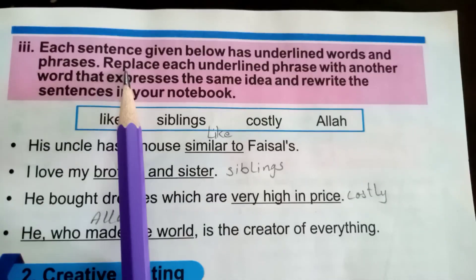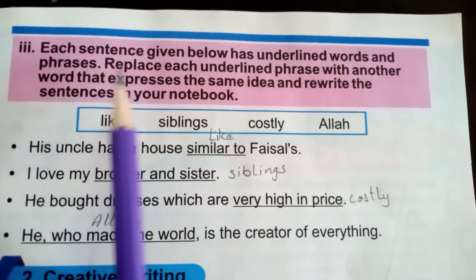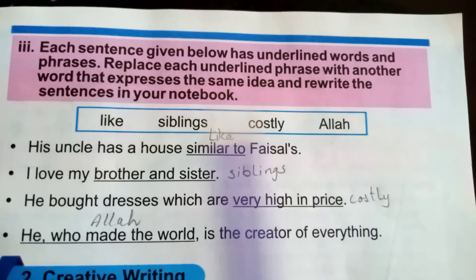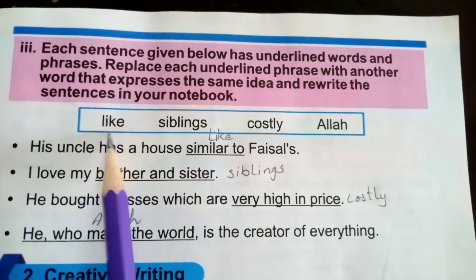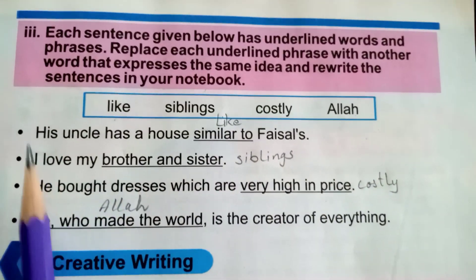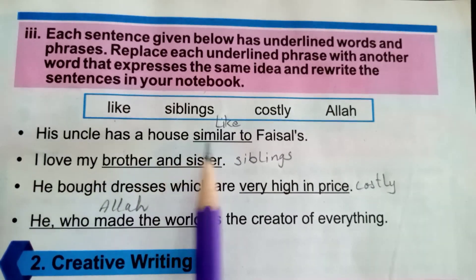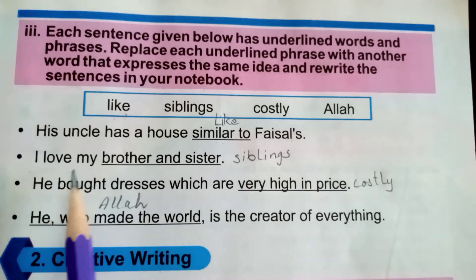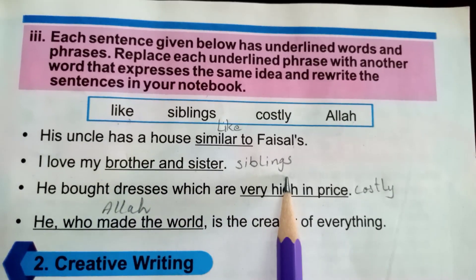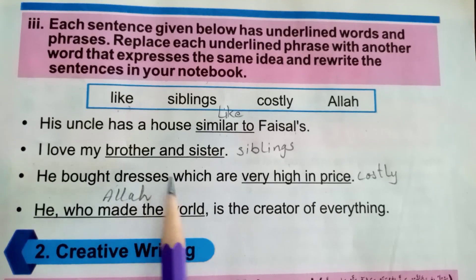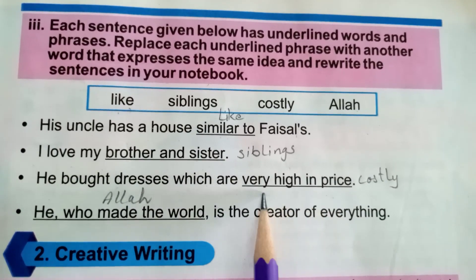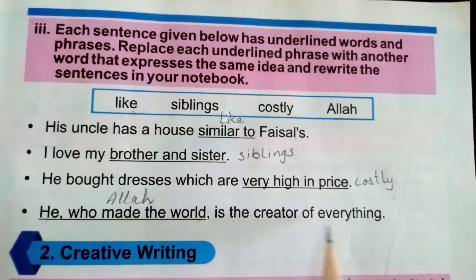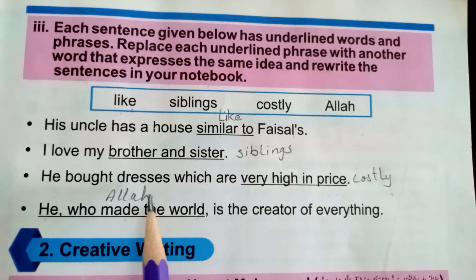Next: each sentence has an underlined word or phrase. Replace each underlined phrase with another word that expresses the same idea and rewrite the sentence in your notebook. Words given: siblings, costly, Allah. Uncle has a house similar to vessels — replace 'similar to' with 'like.' I love my brother and sister — replace 'brother and sister' with 'siblings.' He bought dresses which are very high in price — replace 'very high in price' with 'costly.' He who made the world is the creator of everything — replace that phrase with 'Allah.'